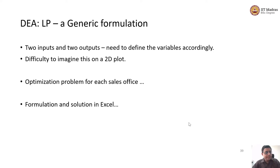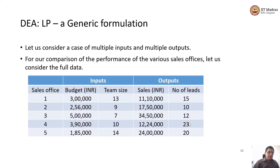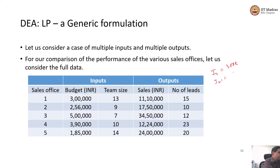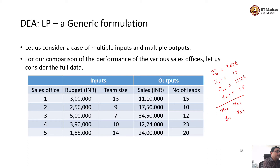Let us look at the formulation for sales office one. There are two inputs and two outputs. Input one for DMU1 (i₁₁) is three lakhs (300,000). The second input (i₂₁) is 13. Output one for sales office one (o₁₁) is 11 lakhs and 10,000. The second output (o₂₁) is 15. The decision variables are input weights x₁₁ and x₂₁, and output weights y₁₁ and y₂₁.